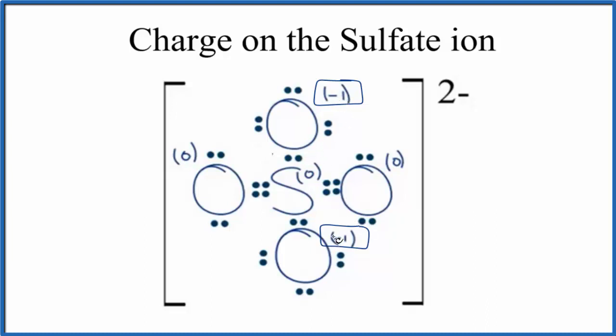So negative 1 and negative 1, that's where we get that 2- from for the ionic charge. And ionic charge, when we write that, we do put the negative sign after the number.